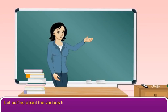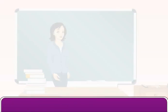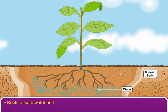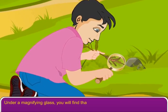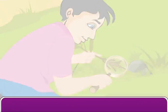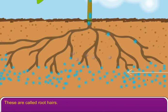Let us find out about the various functions of the roots. Roots absorb water and minerals from the soil. Under a magnifying glass, you will find that the roots have numerous hair-like structures. These are called root hairs. Root hairs absorb water and minerals from the soil.